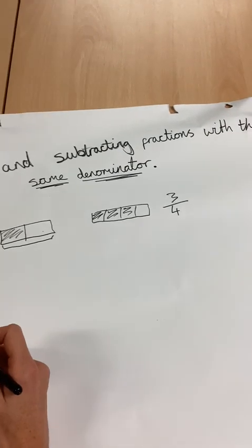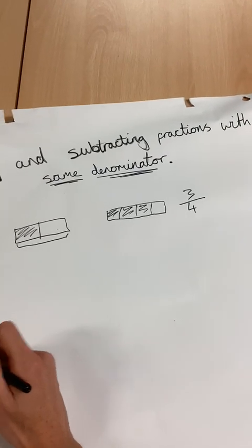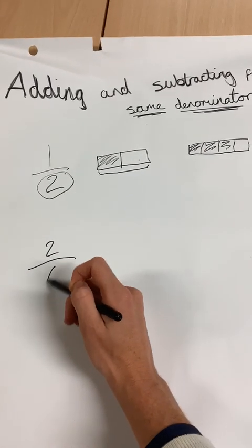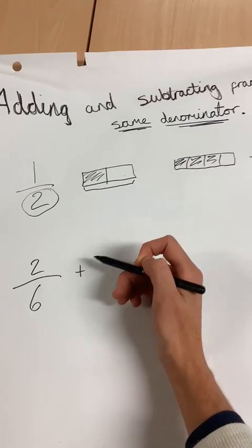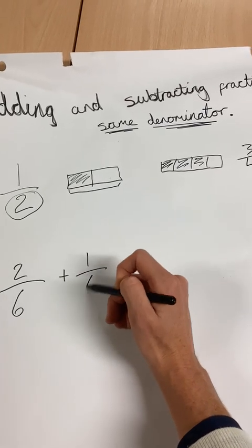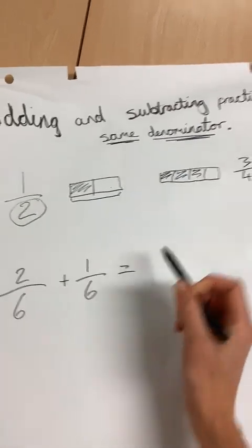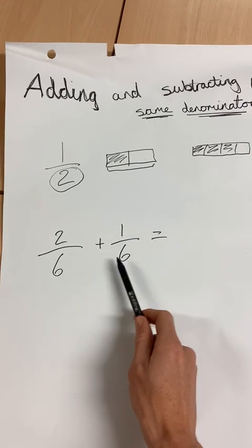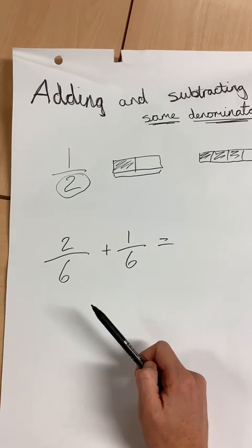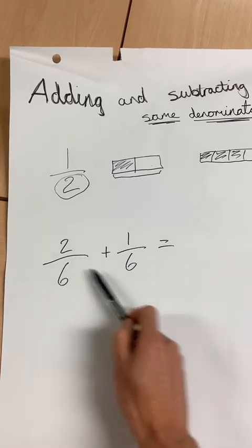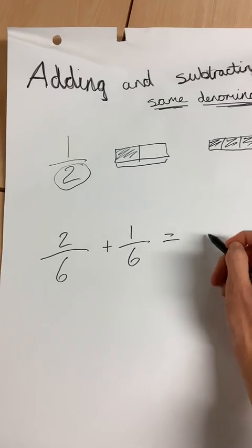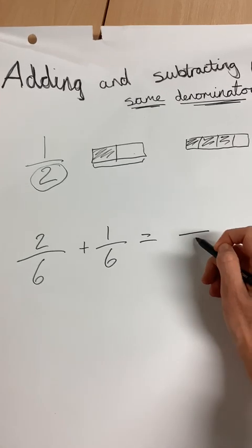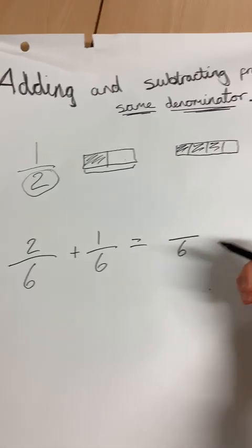So to do this, if we had two sixths plus one sixth, because they have the same number on the bottom, it makes it simple. We do not add the bottom. We just have the same number on our answer.